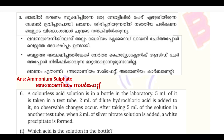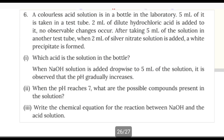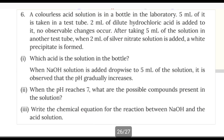We will do the test with dilute hydrochloric acid. We will use barium chloride to identify the chemical — ammonium sulfate. Take 5 mL of the solution in a test tube, then add 2 mL of dilute hydrochloric acid to it.